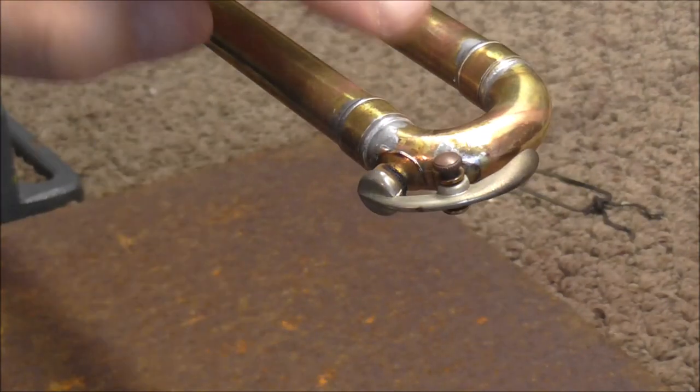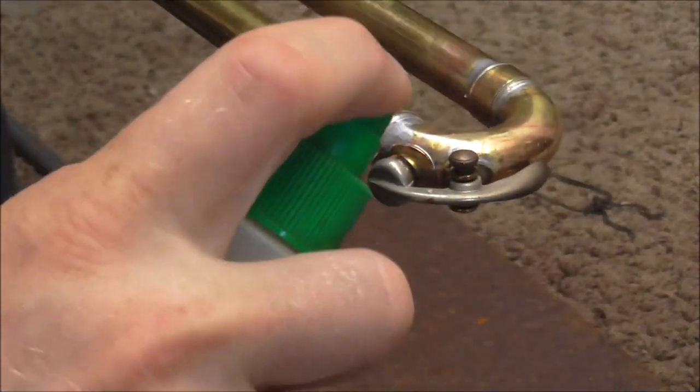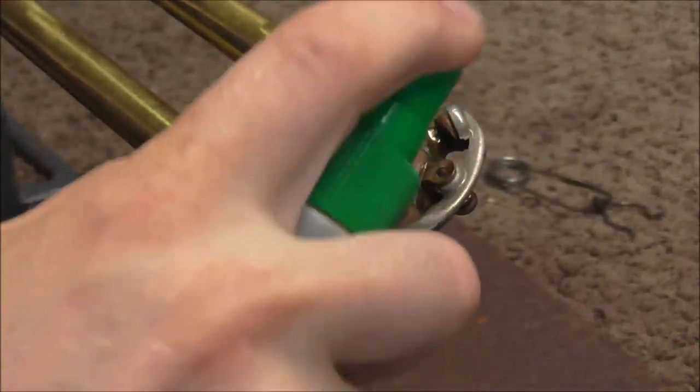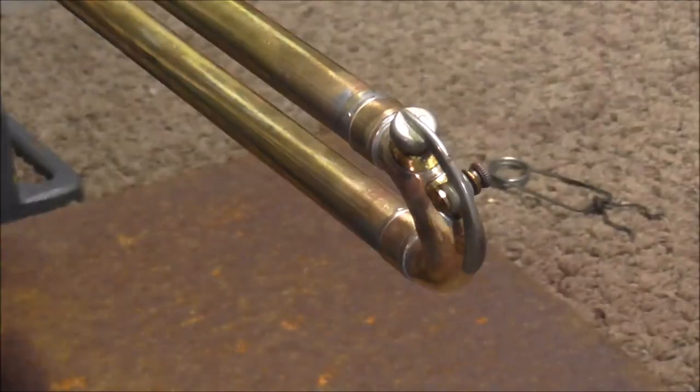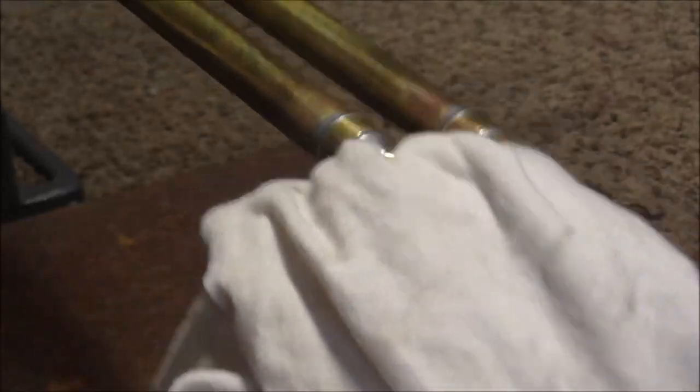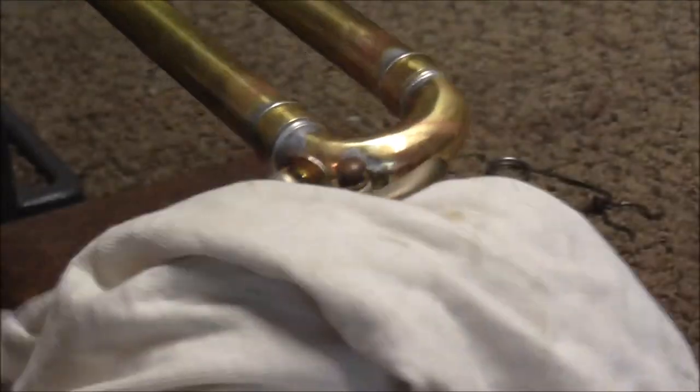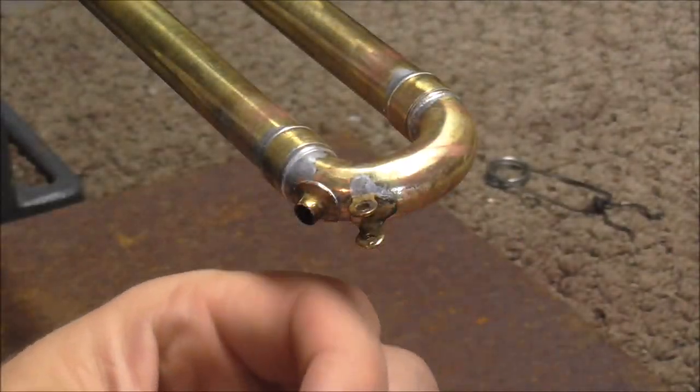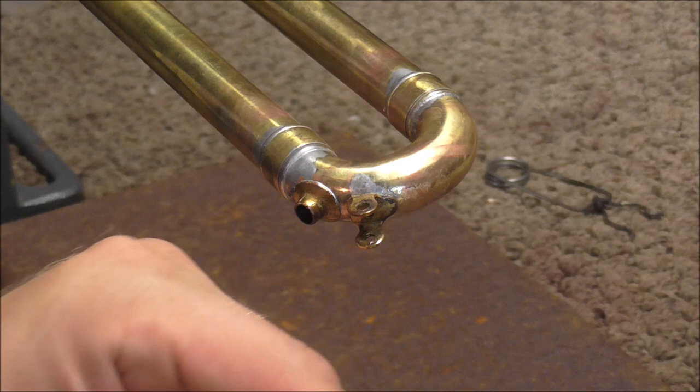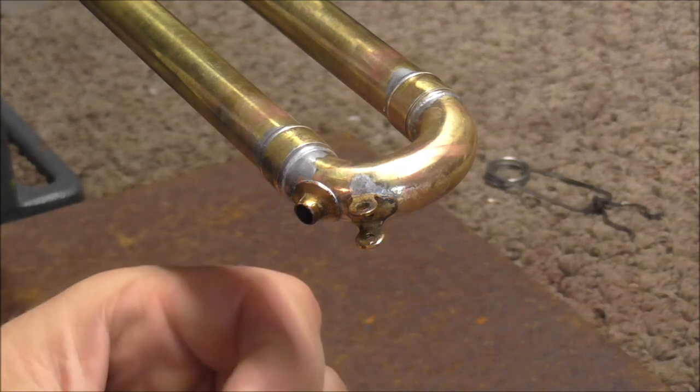Now I'm going to wait for that to cool and take it apart. It's a few minutes later, and this has cooled off, so I'm going to neutralize the flux. And what this is, it's ammonia mixed with some water, and it neutralizes the flux so that it stops eating away at the metal. Okay, I'm going to clean that up, that's cleaned up, and take it apart. And the old water key cork, I'm going to take that out and throw it away.